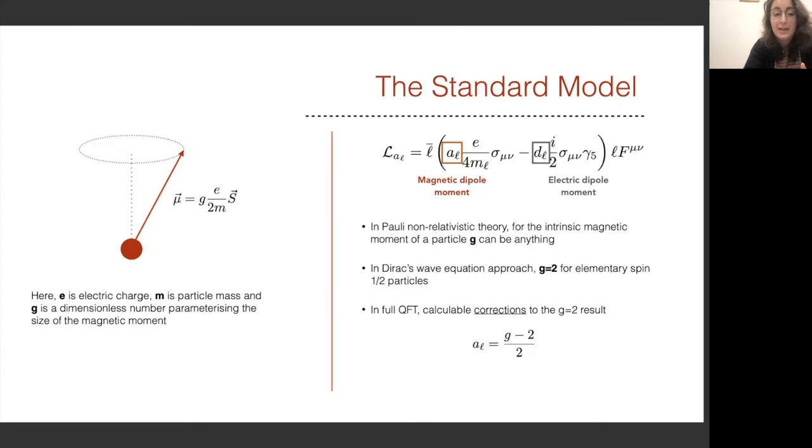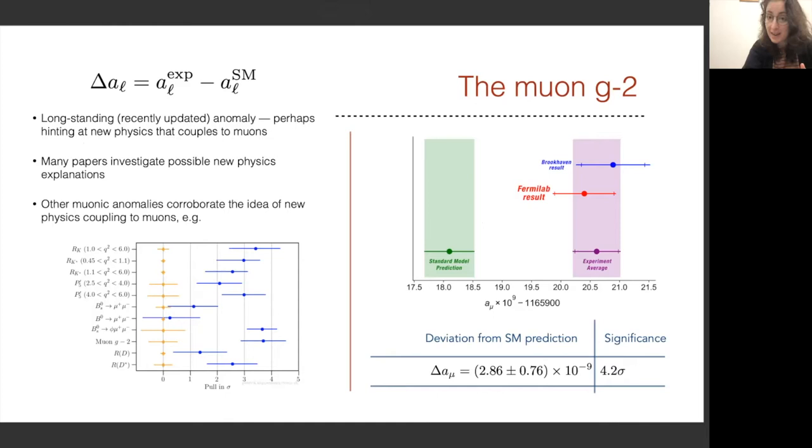Nowadays in full quantum field theory, we can actually calculate corrections to the g equals 2 result, and this is what we parameterize by the value of a_l. So here on, whenever I say a_l, I'm going to refer to it as g minus 2.